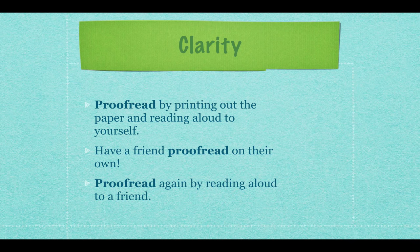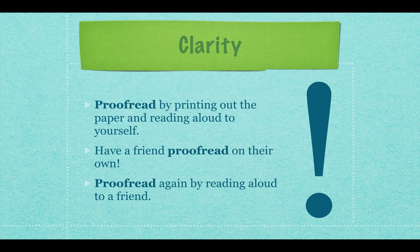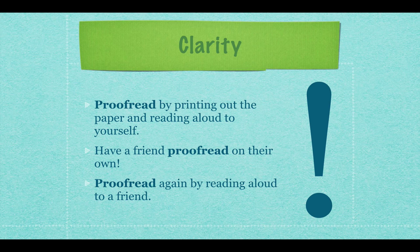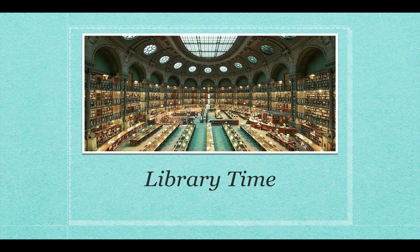The third step: proofread again by reading aloud to a friend. Get the paper back, make all the changes your friend suggested, then print it out and read it aloud to somebody else. As you read aloud, you'll catch more issues, and your friend hearing it for the first time will catch things too. By doing this three-step process — proofread out loud to yourself, have a friend proofread, then proofread out loud to a friend — you will create high-quality, well-written formal academic papers. Apply all these tips, head to the library, find some books, read great authors, and learn to emulate their style. That's it for this episode — have fun writing.